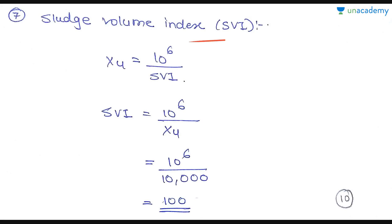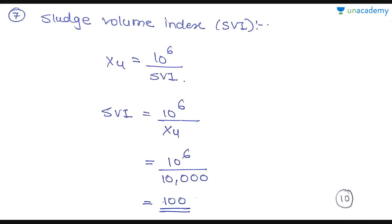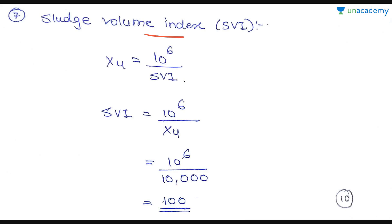Finally, the sludge volume index (SVI). Using the relationship XU ≈ 10⁶ / SVI, we get SVI = 10⁶ / XU = 10⁶ / 10,000 = 100. In this way we can find all the parameters. You can also find the volumetric loading rate as a homework problem using the formula mentioned in the design parameters lesson — let me know your answer for that.